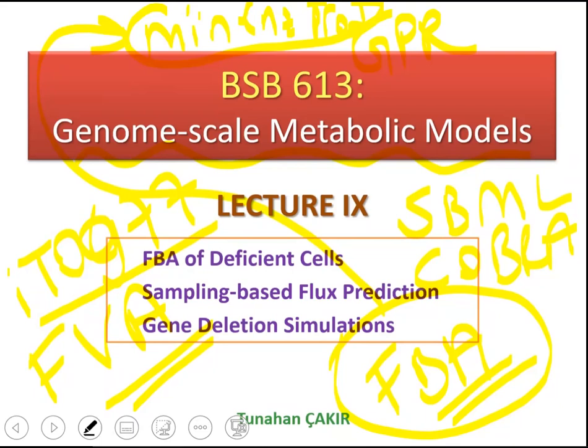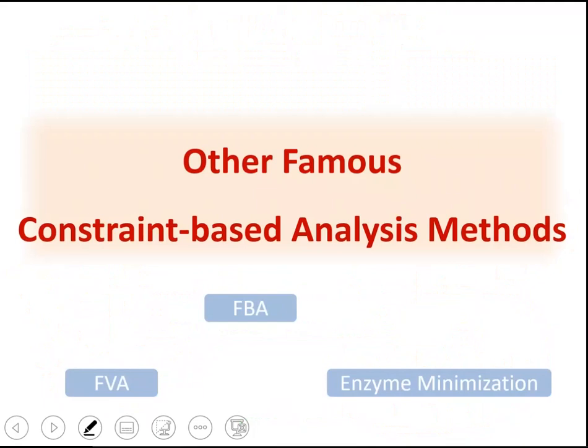To minimize alternate optima, you should do a secondary optimization to minimize enzyme production. For this, you can use minimization of sum of squares of fluxes, or minimization of absolute sum of fluxes — which corresponds to the approach called parsimonious FBA — or we can minimize the number of active reactions.